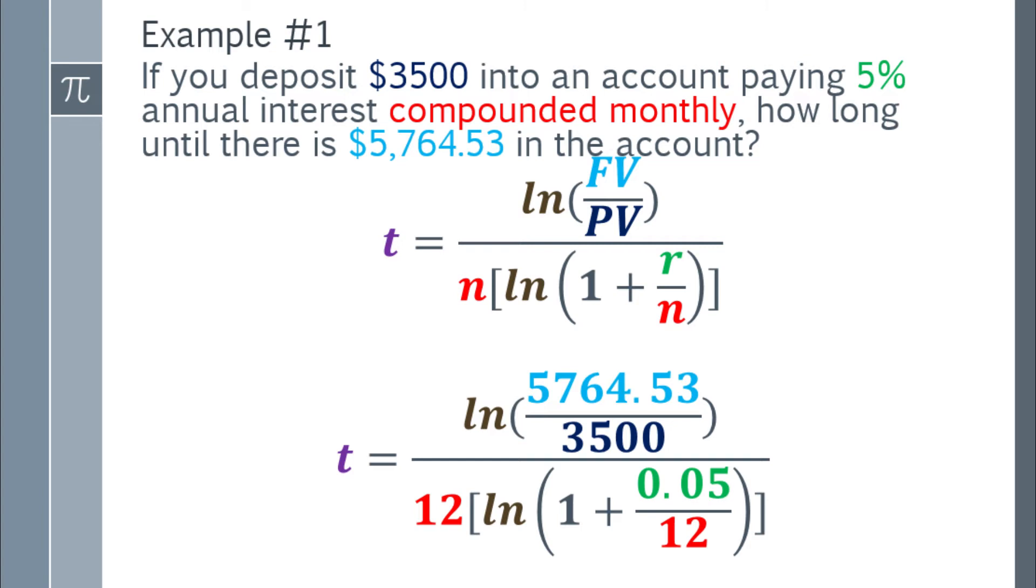Next step is to substitute the values. Time equals, in the numerator part, Ln of future value over present value. So, 5,764.53 divided by 3,500. We're done with the numerator part. For the denominator, it's compounded monthly, so that will be 12 for our N. Times the quantity of Ln, then parentheses again, 1 plus 0.05 over 12. How did it become 0.05 over 12? Our R is 5%. You have to change it to decimal, so that will be 0.05. The denominator part is compounded monthly, so that becomes 12.